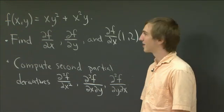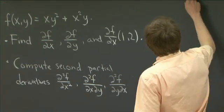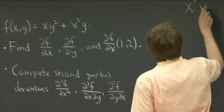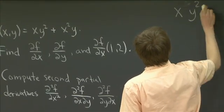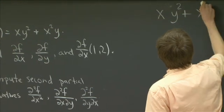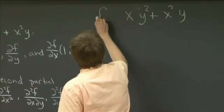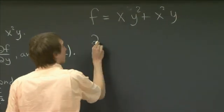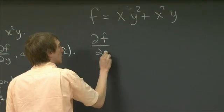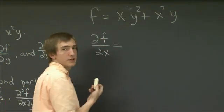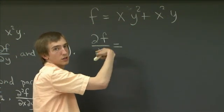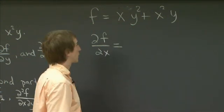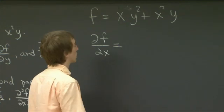OK, welcome back. Let's get started. So we have xy² plus x²y. That's our f. So when we take the partial derivative in the x direction, remember, this just means that we treat y as if it were a constant, and we just take an ordinary derivative in the x direction, as we would do in one-variable calculus.